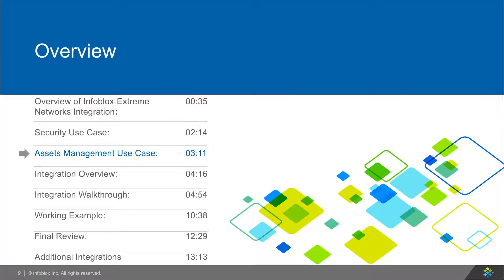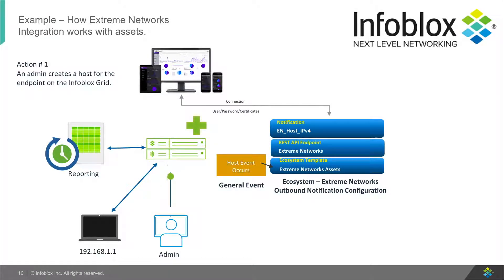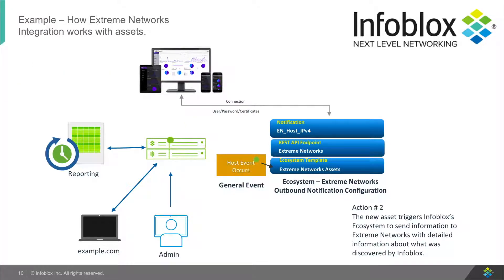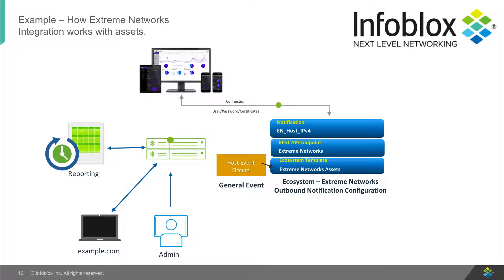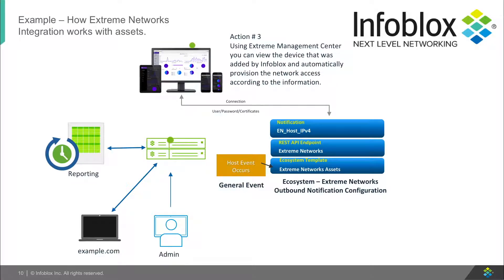Let's look at a use case where Infoblox can add a new asset to the Extreme Network side. Here, an admin creates a host or reservation, or a new DHCP lease is obtained, or a device is discovered on the network. In return, this causes the ecosystem templates to be triggered, sending information to the Extreme Management Center with information about the host, reservation, or DHCP lease, or discovered device. Finally, the host is added to an in-system group, which you can use to automatically give network access according to the information.